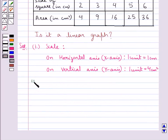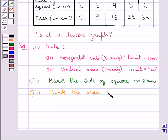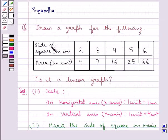Then, using the scale, we mark the side of the square on the x axis, and also we mark the area on the y axis. As you can see, we have marked the side of the square on the x axis and the area of the square on the y axis. Now, using this table, we will plot the points.